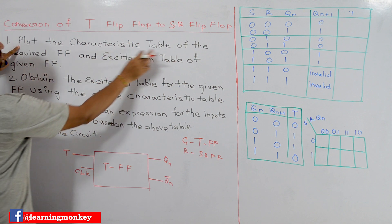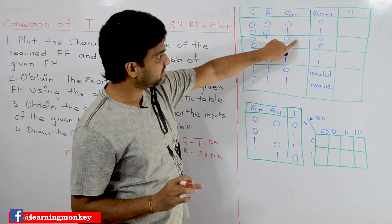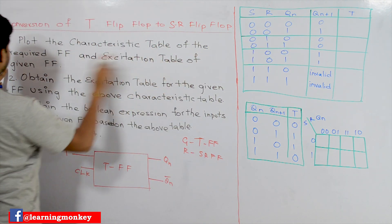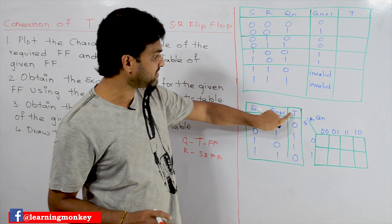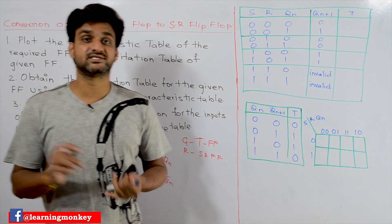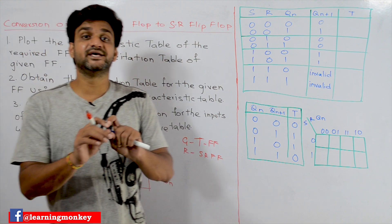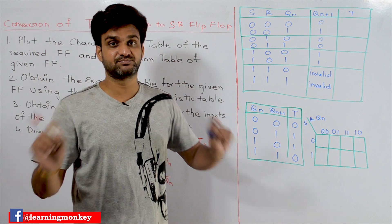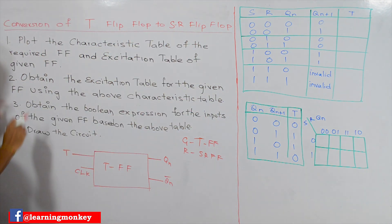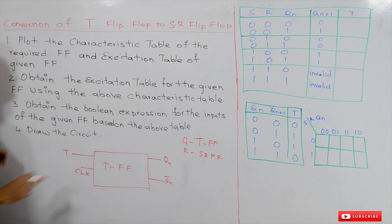Our next step is to plot the characteristic table of the required flip-flop. This is the characteristic table of the SR flip-flop, and the excitation table of the given flip-flop, which is the T flip-flop. Discussions about SR, D, JK, and T flip-flops have been made in our previous videos — please watch those. The characteristic table and excitation table have been taken, and the next step is to obtain the excitation table of the given flip-flop using the above characteristic table.